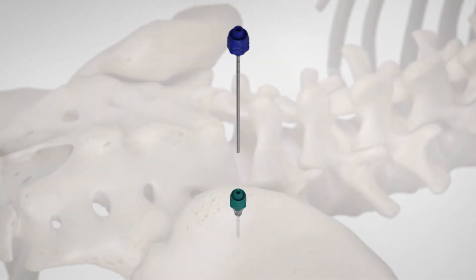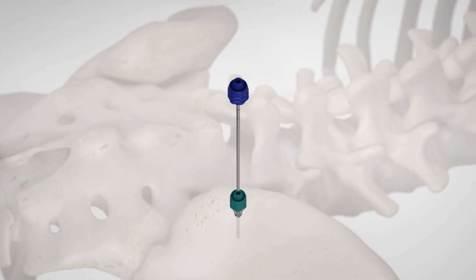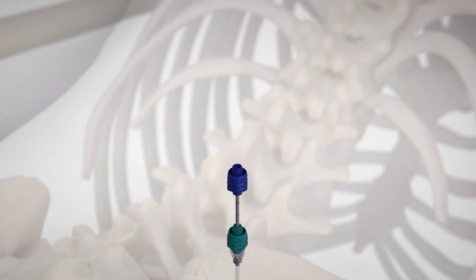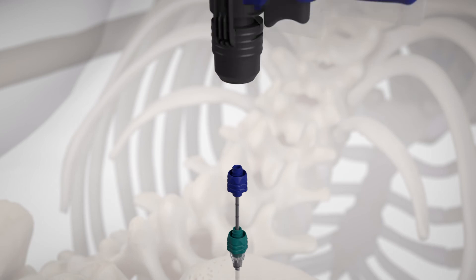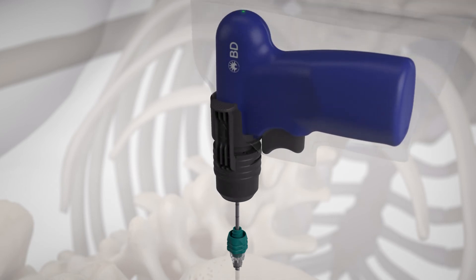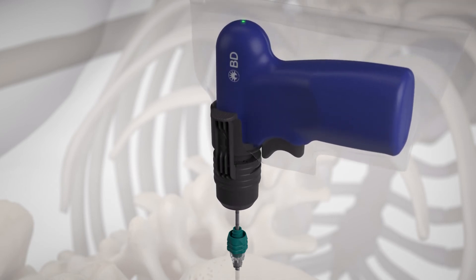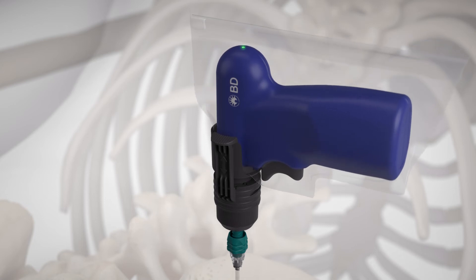For a core biopsy, select the biopsy cannula and insert it into the introducer cannula. Now, attach the power driver to the biopsy cannula, squeezing the trigger to advance the needle to the desired depth to capture a sample.